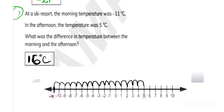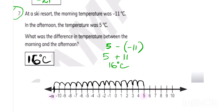Let's also solve it with integers. We need the difference of 5 and minus 11. 5 is bigger, so I write 5 first, then the difference sign, then minus 11. Two different signs become a positive sign, giving us 5 plus 11 equals 16 degrees centigrade.